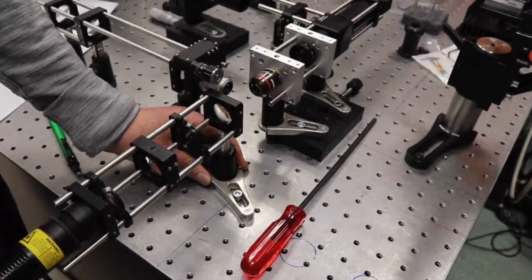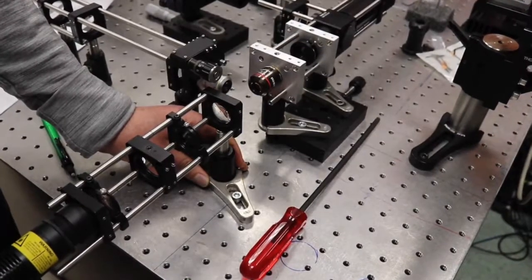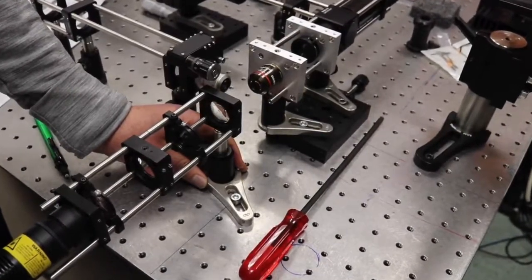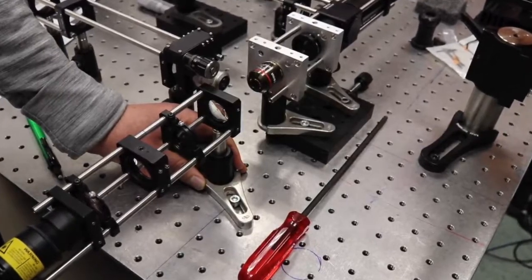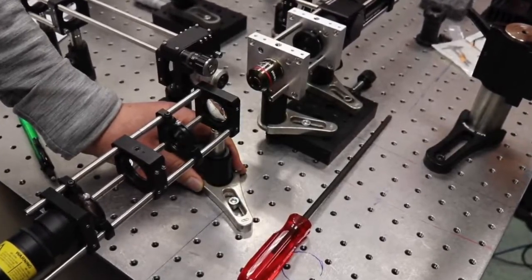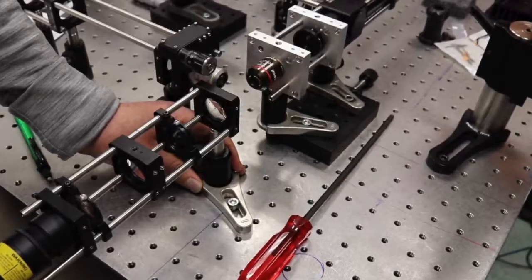Attach a 12.7mm post to the cage plate containing the condenser lens and mount the assembled condenser on a post holder. Make sure that the height of the illuminator is the same as the microscope.